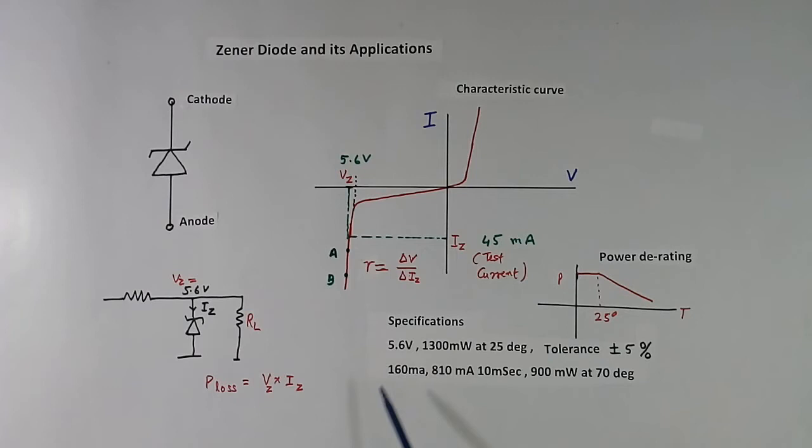Now Zener diode has 3 currents. One is test current, one is normal current, third is surge current. Test current means you will get 5.6V at this current. This is the test current. For example 45 mA if we flow in a Zener diode, voltage measured across this will be 5.6V. Second is 160 mA which is continuous current it can take. Third is surge current. Now you see this current, 810 mA is almost 5 times compared to 160 mA normal current. It means for surge time, this can take much more current, say 810 mA, this is just example, 810 mA for 10 ms only, not for longer time.